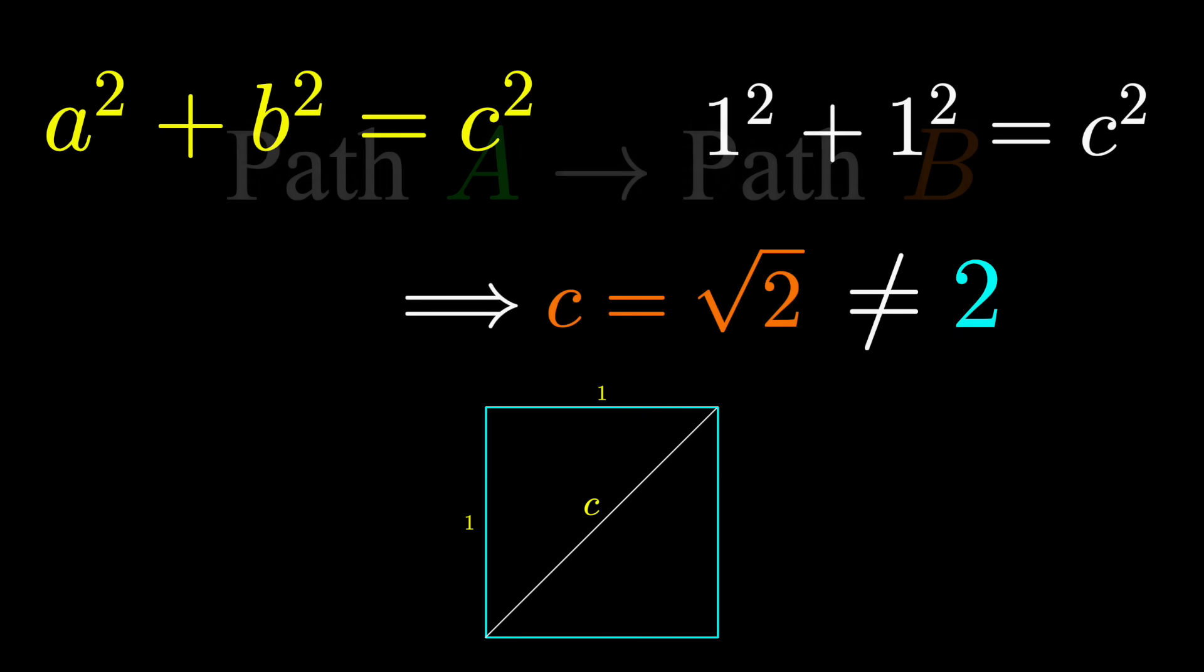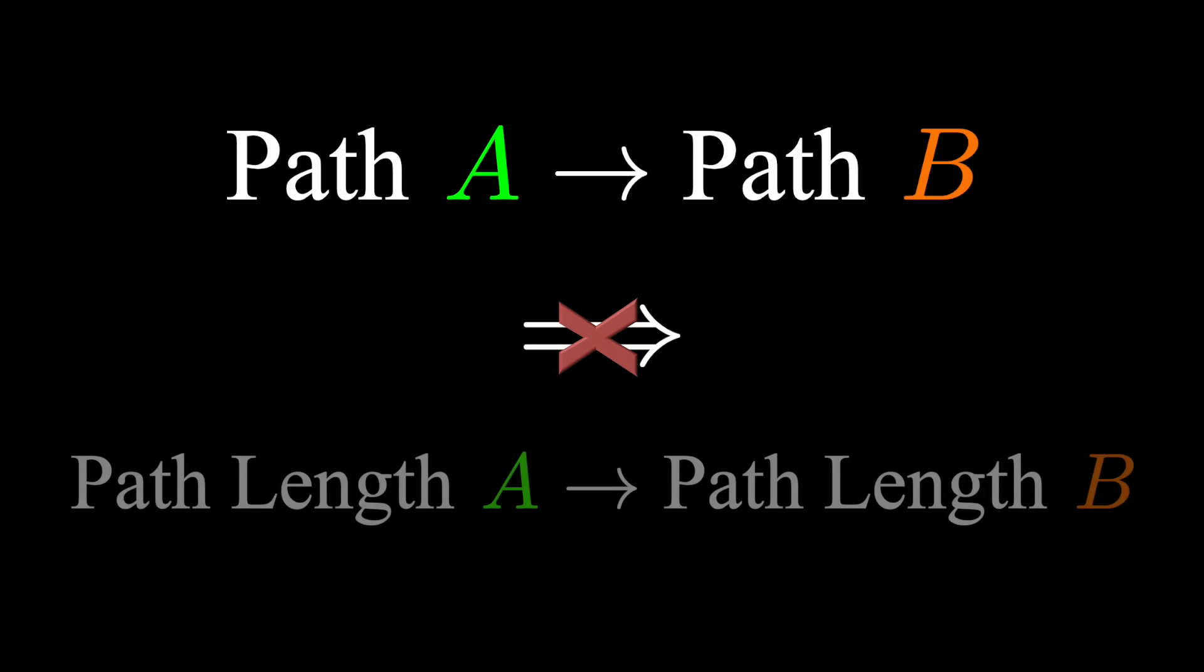One path approaching another does not mean that the path lengths are equal. And this logic exposes the fallacy that pi equals 4.